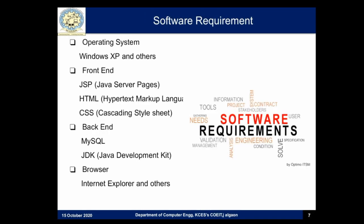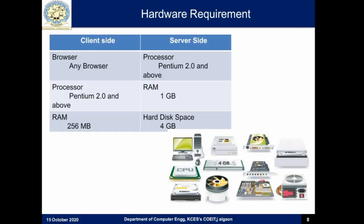Next is the software requirement. For developing our application, the operating system used is Windows 7 or Windows 10. On the front-end side, we use JSP, HTML, and CSS to design our website or web application. On the back-end side, we use MySQL and JDK. The web application can be run on any web browser like Chrome, Mozilla Firefox, etc. On the client side, any browser can be used to run our application.